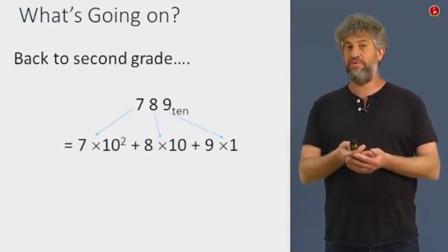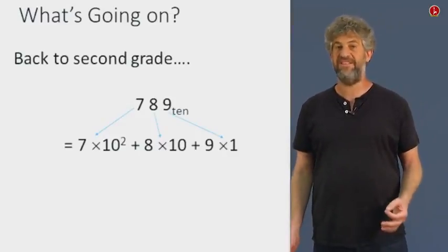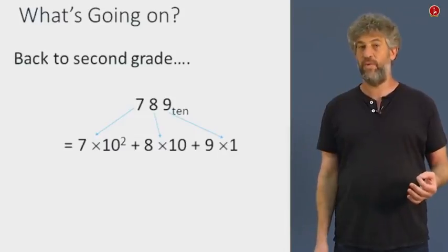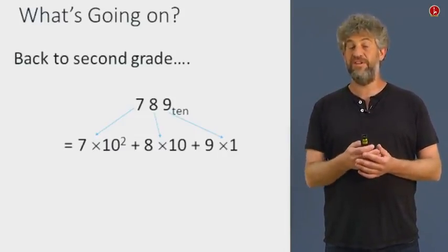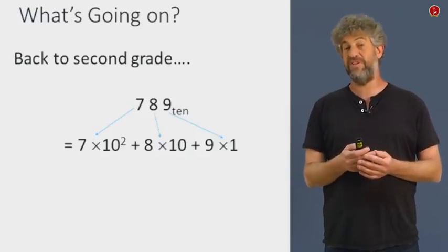So we know that 789 is really 9, plus 8 tens, plus 7 hundreds, and so on. In general, the kth position from the right is 10 to the k.